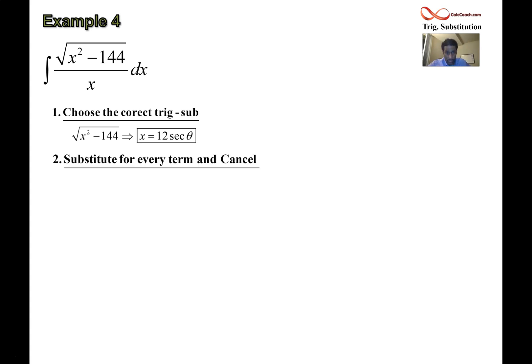In the second step, your job then is to substitute for everything. I like to color code it. There are three different terms inside of the integral. We have to sub for every single one of those terms: the square root, the x in the denominator, and also dx. After that, make sure you cancel if there's anything to be canceled.